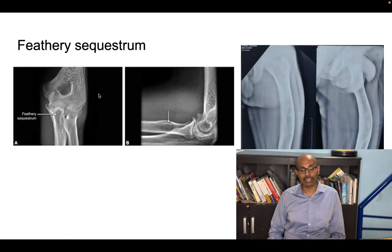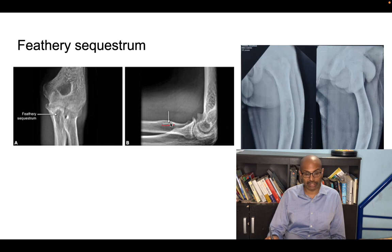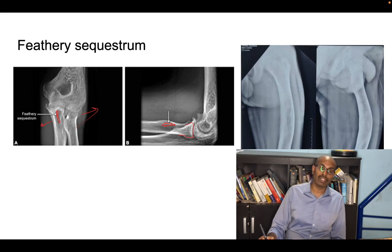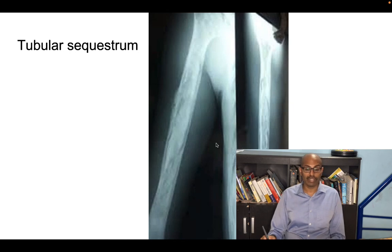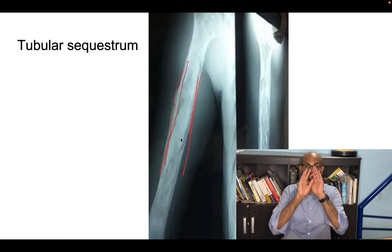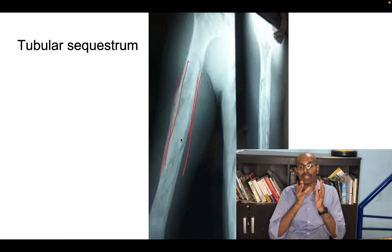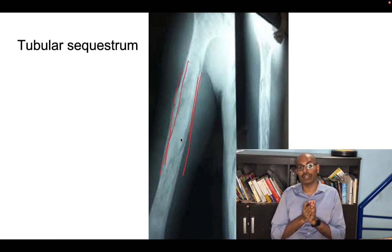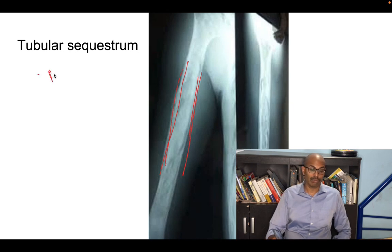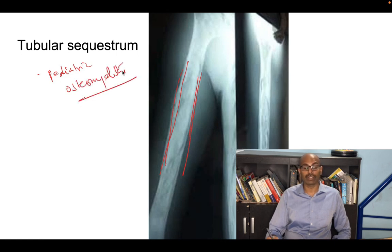The second type is feathery sequestrum, which has a feather-like appearance inside the bone and is seen in tuberculosis. The third type is tubular sequestrum, where a large portion of the bone in tube form becomes sequestrum. This is very commonly seen in pediatric osteomyelitis, where a large portion of bone becomes dead bone.